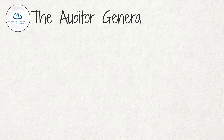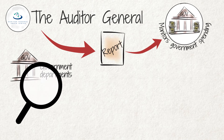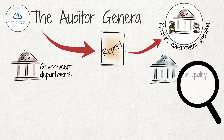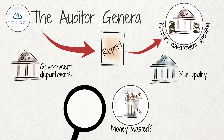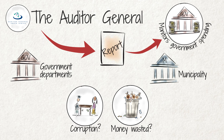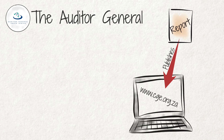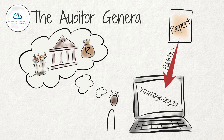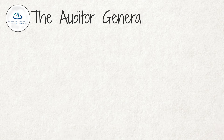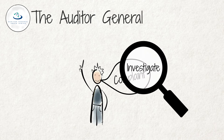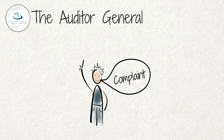The Auditor General. The Auditor General monitors and reports on government spending. It inspects each government department and each municipality yearly to see whether money was wasted or to identify corruption. It publishes reports setting out how the municipality or government department managed its money and explains wrongdoing if necessary. The reports are published on the Auditor General's website, where you can also find out if your municipality has spent its money wisely or whether there have been wastages. If the Auditor General receives a complaint or request from the public, it can investigate them if it considers the matter to be in the public interest.